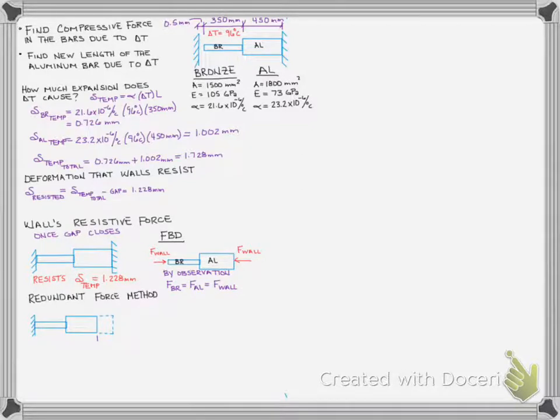So I got ahead of myself there and started drawing the next step. But what we want to draw is the redundant force method. So we can draw our member and we can show just one of the ends fixed. So I chose to show the end by the bronze as now fixed and I removed the redundant support at the aluminum. And so obviously under the influence of the 1.228 millimeters, we're going to expand by 1.228 millimeters.